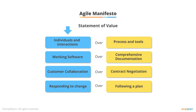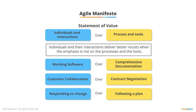And on the left, you have those things that are more agile in nature. Let's review each of these four lines. Individuals and interactions over processes and tools. Clearly, any project requires processes and tools. However, individuals and their interactions deliver better results when the emphasis is not on the processes and the tools.